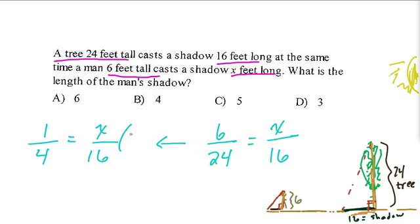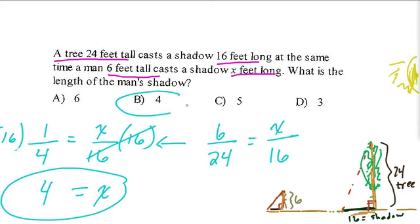To solve this, I would multiply both sides by 16. And then things work out really nicely because 16 divided by 16 is 1, and the shadow on the man should be 16 times 1 fourth, which is just 4. So here the answer would be 4.